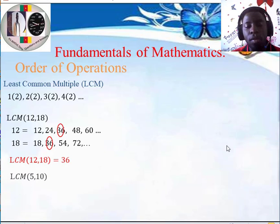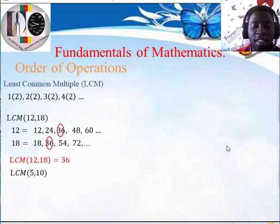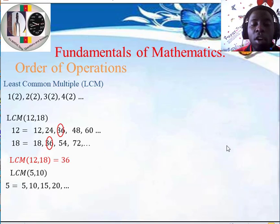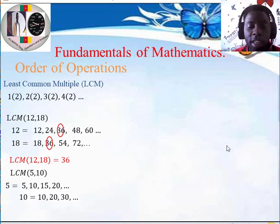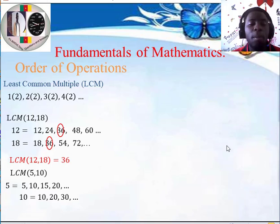Let's find the least common multiple of 5 and 10. We list the multiples of 5: 5, 10, 15, 20, and so on. The multiples of 10 are 10, 20, 30, 40, and so on. We have already seen a least common multiple here, which is 10. While 20 is also common, it is not the least, so we can't pick 20. The least is 10. Therefore, the LCM between 5 and 10 is 10.